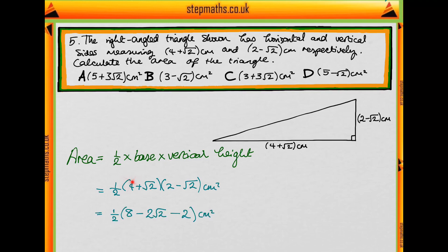When we expand this out, we do the 4 times 2 which gives us 8. We do the root 2 times minus root 2 which gives us minus 2. And we have 2 root 2 minus 4 root 2 which gives us minus 2 root 2.